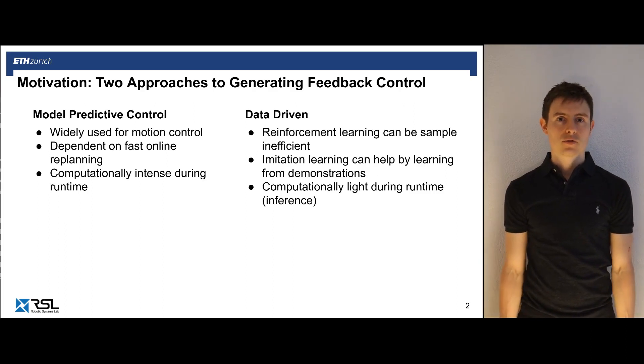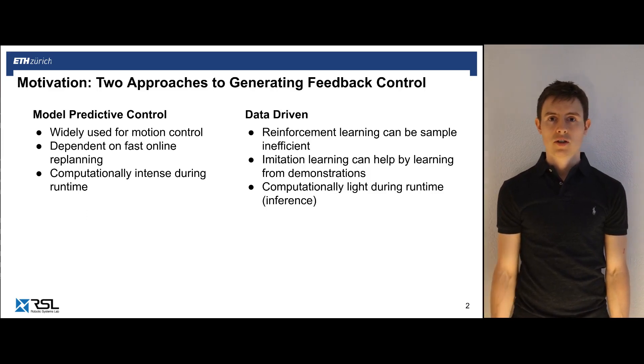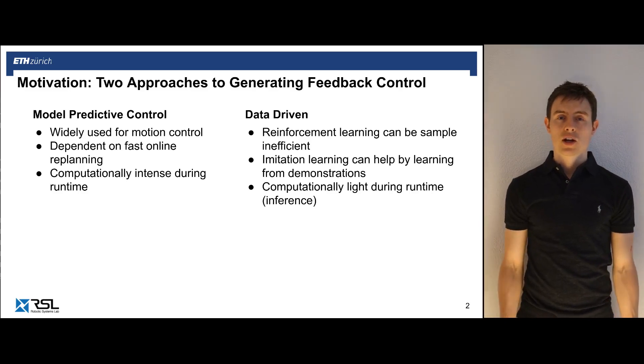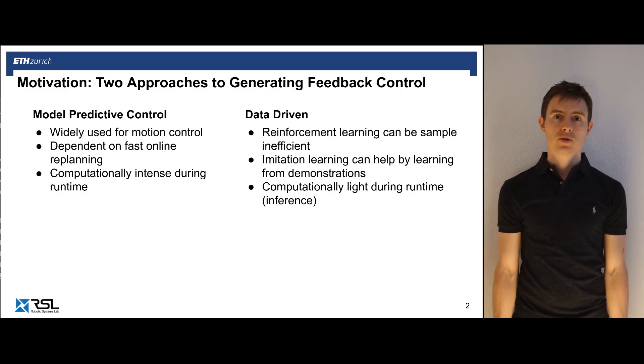On the other hand, data-driven approaches have shown remarkable successes over the last years. In particular, reinforcement learning can discover new kinds of behaviors, yet it is very sample inefficient. Imitation learning is one way to boost the sampling efficiency by being able to learn from guiding demonstrations. At runtime, data-driven approaches are typically less computationally intense because networks have been pre-trained and the evaluation of those is much faster.